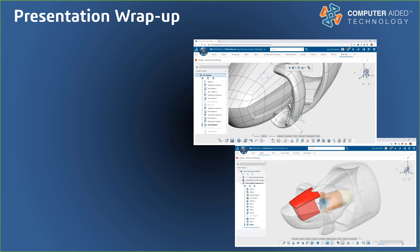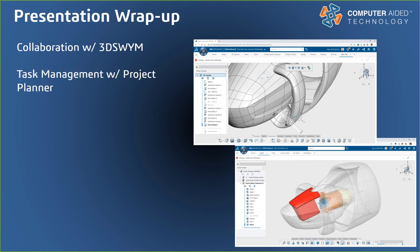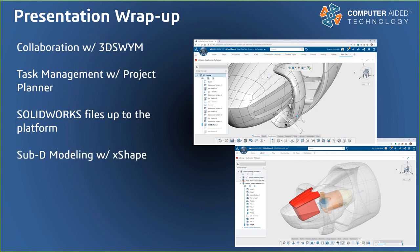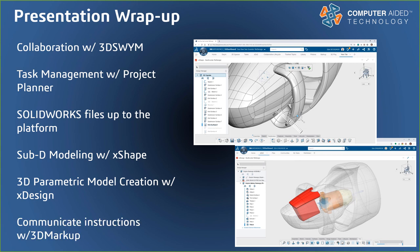Now that I've got my clubs put away and my golf shoes off, let's go through what we've done today. We've collaborated with our team in a fully connected environment using 3D Swim. We've helped streamline our tasks and deliverables using Project Planner. We've leveraged the platform inside of SolidWorks, pulling data up and down from the platform into standard SolidWorks. We made curvy stuff going into Todd's happy place — X-Shape — and we've also gone to Randy's happy place by adding design intent to our parametric models on any device we want, be that Mac, PC, Linux, or mobile. And we did all of that while communicating with a markup in a single environment on a web browser.